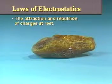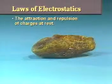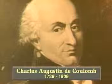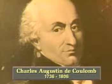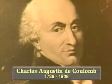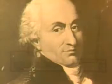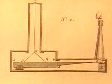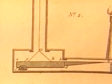The laws of electrostatics describe the attraction and repulsion of charges at rest. Charles Augustin de Coulomb discovered these laws and was the first to establish a way of measuring the attraction and repulsion of electrical charges. Coulomb began his work on electrostatic and magnetic forces in 1777 when he competed for a prize offered by the French Academy of Sciences for improvements in the manufacture of magnetic needles for maritime compasses.